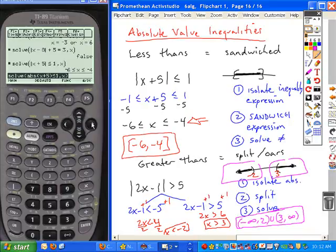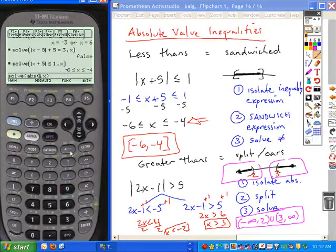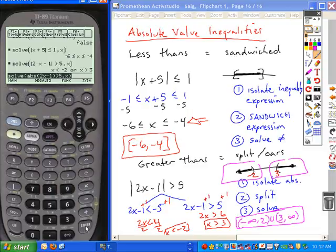Once again, if we were using our calculators for this, if we tested the absolute value of 2x minus 1, and this time is greater than 5, solve for x. Your calculator should verify what we got by hand. x is less than negative 2 or x is greater than 3. It still works on that. And then it's just a matter of translating it into the interval notation.